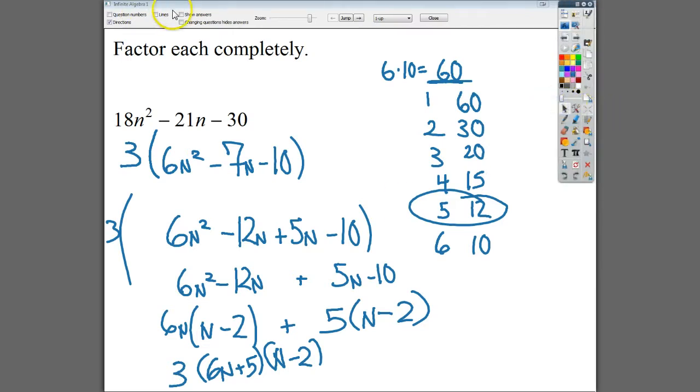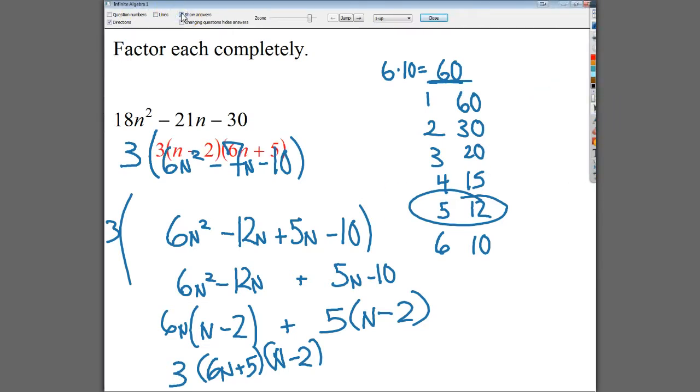So my final answer is three times six N plus five times N minus two. So let me check to make sure I'm right. Because sometimes I'll do these and do them wrong. No, I'm good.